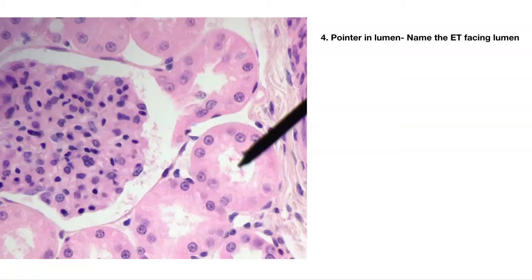Number four. Pointer is in the lumen. Name that epithelial tissue, and tell me where you could find this type of epithelial tissue in your body.